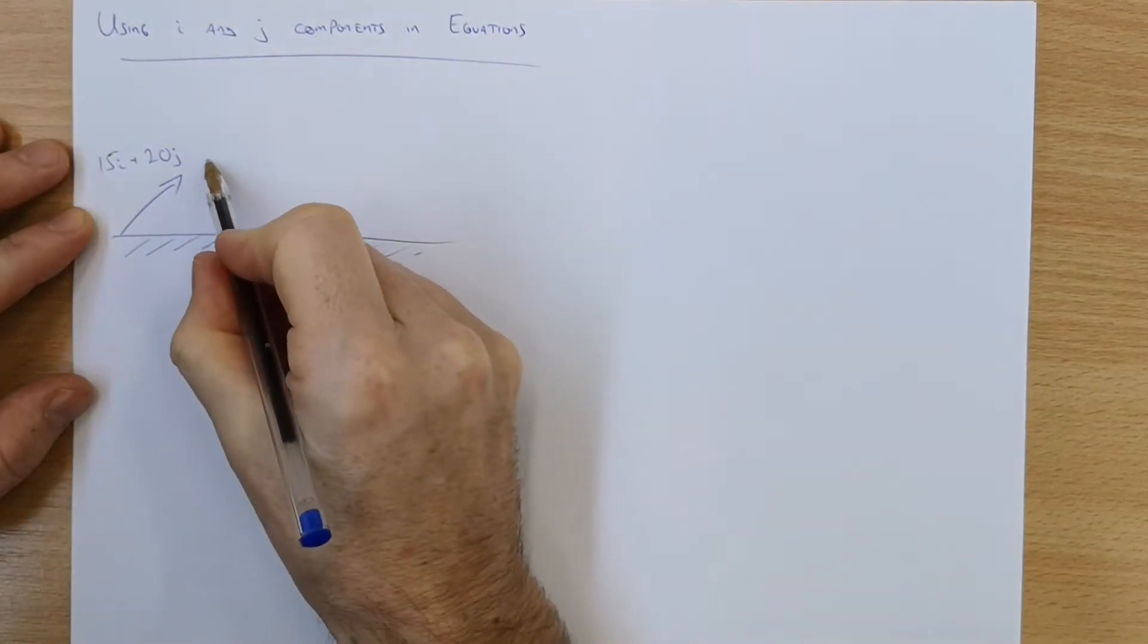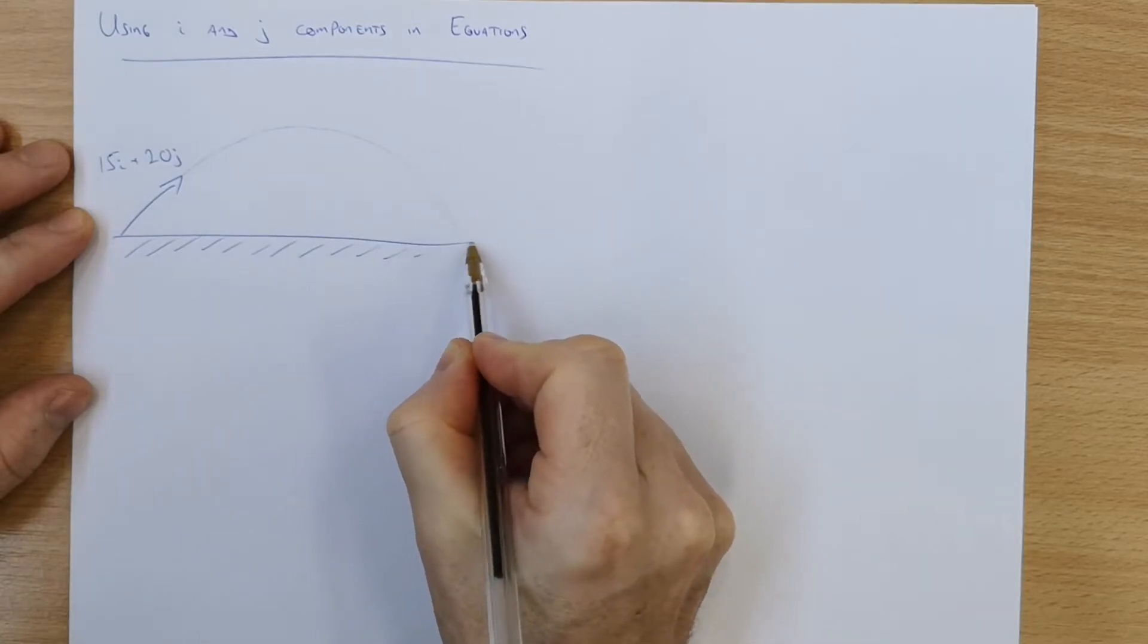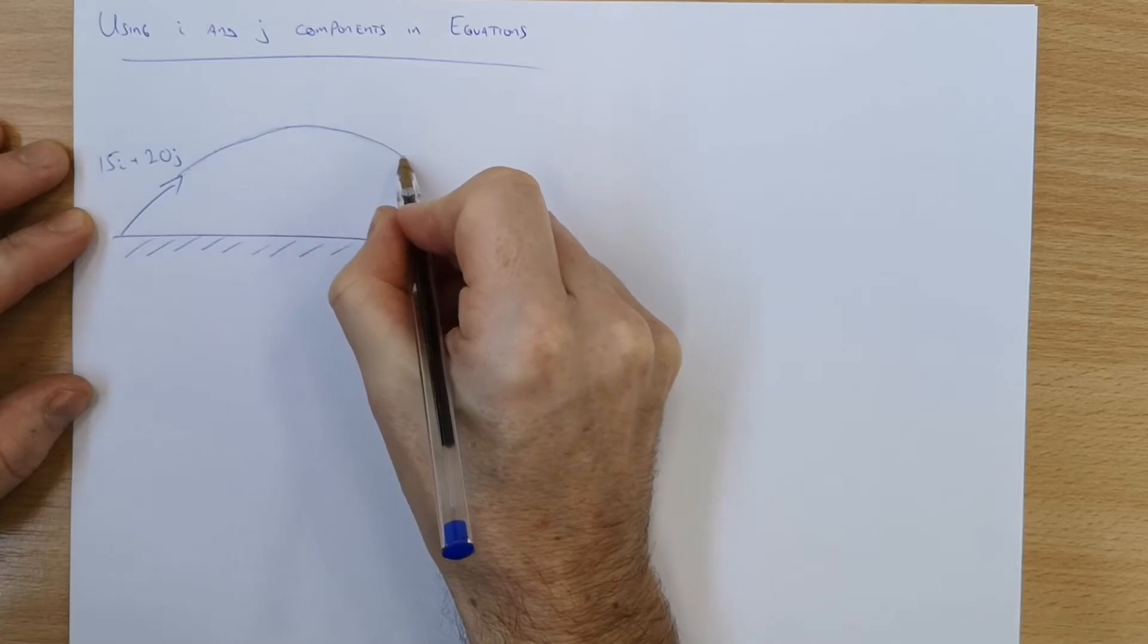And we know that's going to go on a little parabolic path all the way along here and eventually land. A little darker so you can see it, there we go.